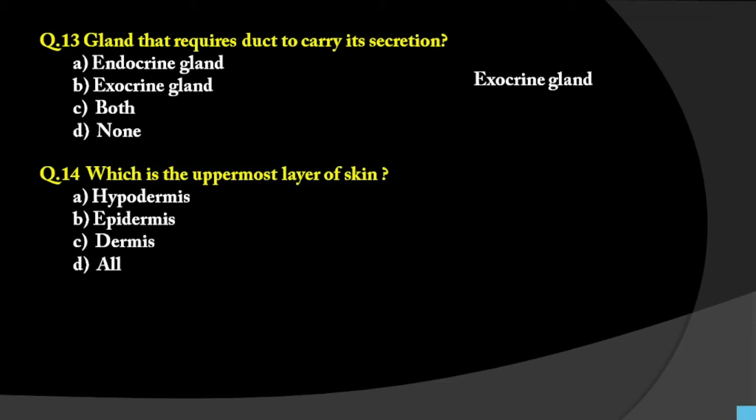Even if you don't know the answer, you can figure it out from the options: hypo means below, epi means above. Since uppermost is asked, and 'epi' indicates upper, the answer is epidermis. This is a useful tip — the prefix in the option name can reveal the answer.